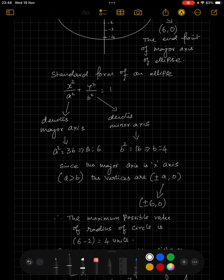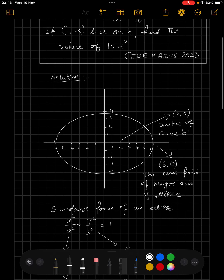For us, only the end point on the positive x axis matters because the center of the circle C is 2 comma 0, that is the center of the circle C lies on the positive x axis. So we consider this positive x axis only for finding out the radius of the circle.